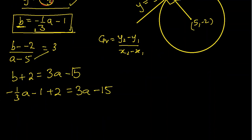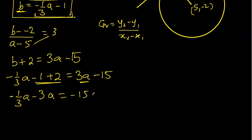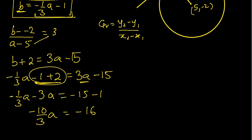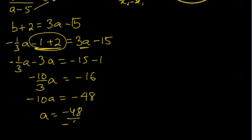Bringing terms together: minus one-third a minus 3a gives minus 10 over 3 times a, and the constants give minus 16. So minus 10 over 3 times a equal to minus 16, meaning minus 10a equal to minus 48. So a equals 48 over 10, which is positive 4.8. That is the a-coordinate of the point on the circle where the tangent touches.